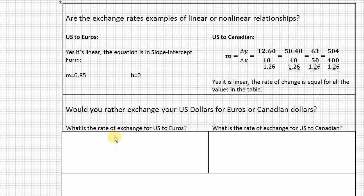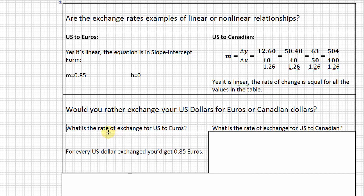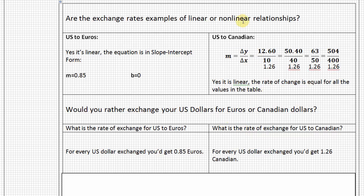Let's take a look at the rate of exchange, which is another way of saying the rate of change. This is telling us with our m value of 0.85 that for every U.S. dollar exchanged, we'd get 0.85 euros. So it looks like we're getting a little bit less money than our dollar there. Let's go ahead and take a look at the exchange rate for Canada. From doing our work above, we can see that for every U.S. dollar exchanged, we'd get 1.26 Canadian dollars.